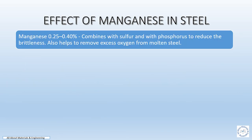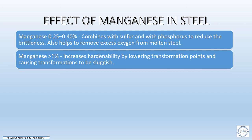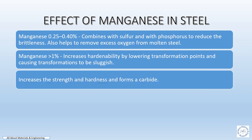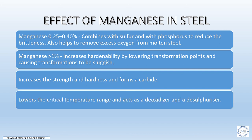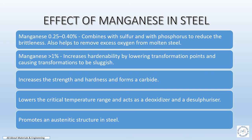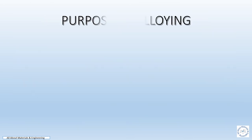Effects of manganese in steel: manganese at 0.25% to 0.5% combines with sulfur and phosphorus to reduce the brittleness of the material. It also helps to remove excess oxygen from molten metal during the manufacturing of steel. Manganese greater than 1% increases hardenability by lowering the transformation points and causing transformation to be sluggish. It also increases the strength and hardness of the material, forms carbides, lowers the critical temperature range, acts as a deoxidizer and desulfurizer during manufacturing, and promotes an austenitic structure in the steel.